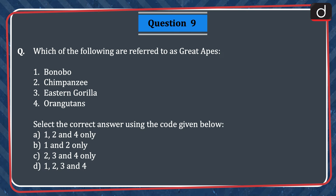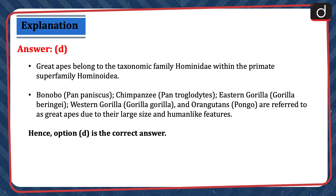Next question: which of the following are referred to as great apes? (1) Bonobo, (2) Chimpanzee, (3) Eastern gorilla, (4) Orangutans. Options: (A) 1, 2 and 4 only; (B) 1 and 2 only; (C) 2, 3 and 4 only; or (D) 1, 2, 3 and 4. The correct answer is option D — all four. Great apes belong to the taxonomic family Hominidae within the primate superfamily Hominoidea. Bonobo, chimpanzee, eastern gorilla, western gorilla, and orangutans are referred to as great apes due to their large size and human-like features. Hence, option D is the correct answer.